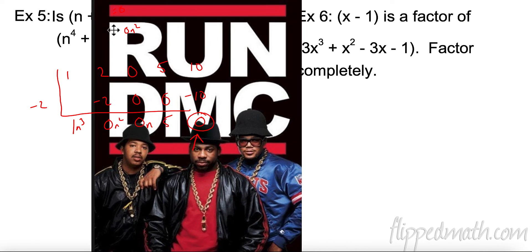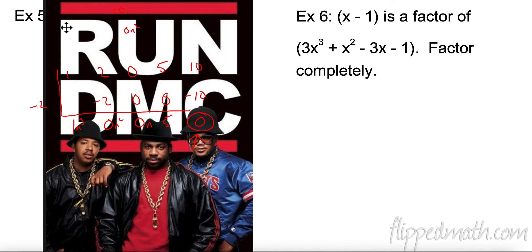Okay, I'm lying. Long division was never great, but run DMC, great. All right, number 6. So it's telling us right off the bat that this is a factor. So when I divide, it should have a remainder of 0. So let's see. 3, 1, negative 3, and negative 1. And I'm going to divide by 1. Now it wants me to factor completely. So I'm going to have to do something at the end, but let's see what we got.